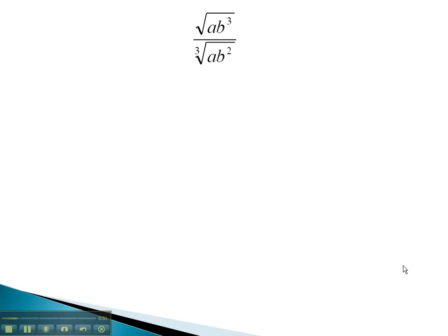Let's start by looking at this problem. You'll notice that the common index between the unwritten 2 and 3 is 6. We'll multiply the numerator's index by 3, and the denominator's index by 2, to get them both under a common index of 6.